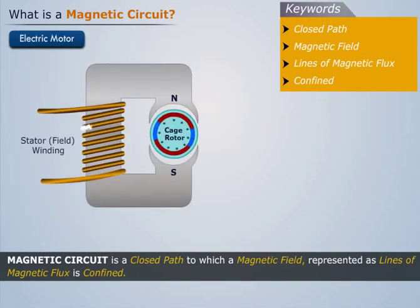In an electric motor, we see that the magnetic field is largely confined to the magnetic pole pieces, the rotor, the air gaps between the rotor and the pole pieces, and the metal frame.